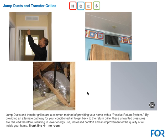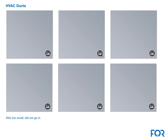On the jump ducts or transfer grills page, if they aren't accessible you can either leave the page out entirely — there will be no recommendation and it won't make it into the presentation — or you can take a picture and add a note like 'trunk line, no room.' If you're going to take pictures, fill up the page with two pictures indicating why there's no room.